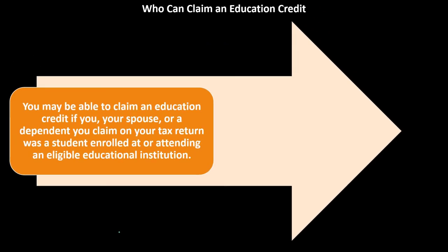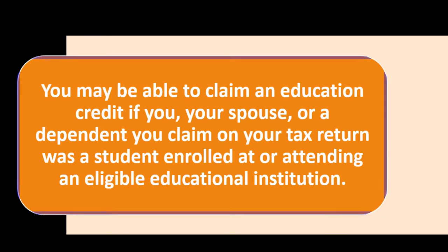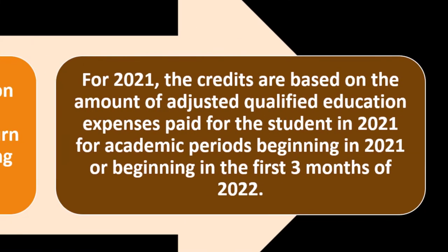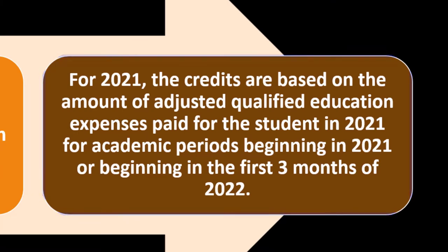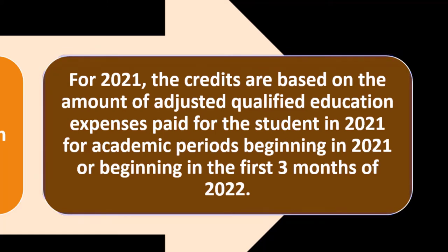Who can claim an education credit? You may be able to claim one if you, your spouse, or a dependent you claim on your tax return was a student enrolled at an eligible educational institution. For 2021, the credits are based on the amount of adjusted qualified education expenses paid for the student in 2021 for academic periods beginning in 2021 or in the first three months of 2022.